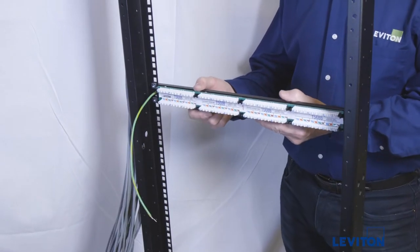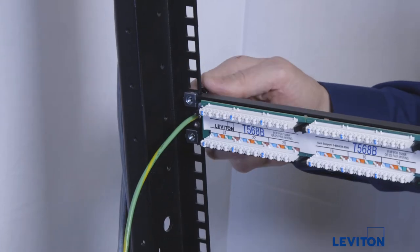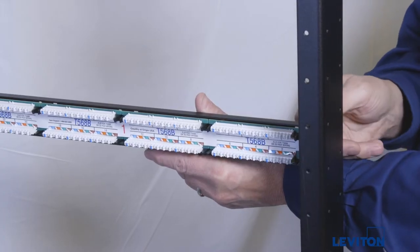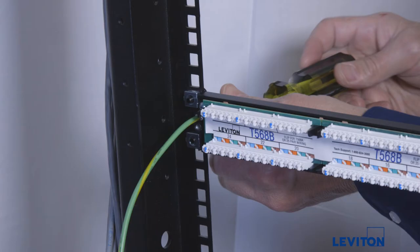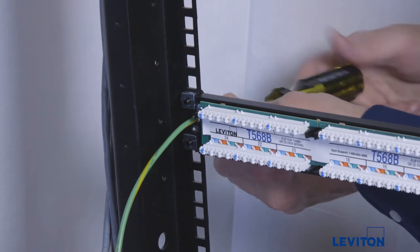Begin by mounting the patch panel on the rack using the cage nuts. Insert the M5 screws and twist them into place loosely. Use a Phillips screwdriver to tighten each screw.